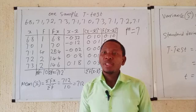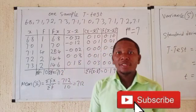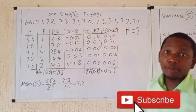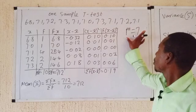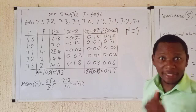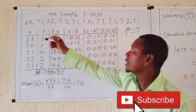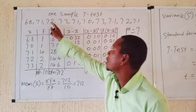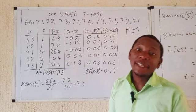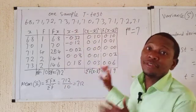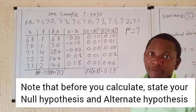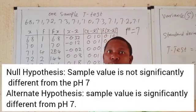Welcome to Science Access. In today's class we're going to be talking about the one-sample t-test. Let's assume that in a country the pH for water is 7, which is neutral, and you decide to collect 10 samples. You are asked to test if the pH you got from the sample is actually different from the usual pH of the population.